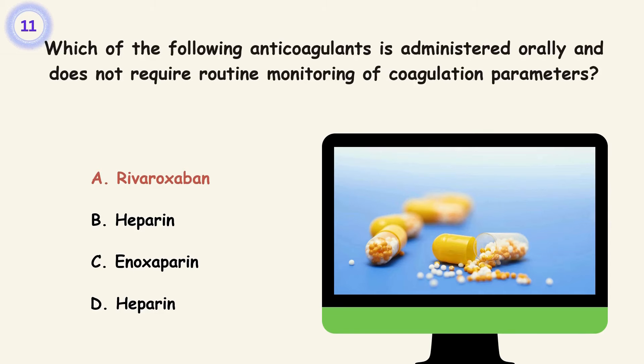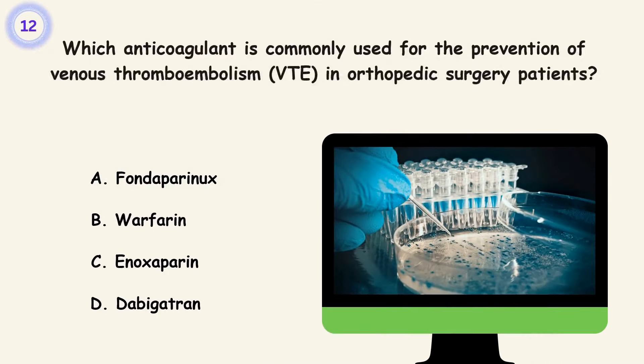Question 12. Which anticoagulant is commonly used for the prevention of venous thromboembolism, VTE, in orthopedic surgery patients? A. Fondaparinux. B. Warfarin. C. Enoxaparin. D. Dabigatran. Answer is C. Enoxaparin.